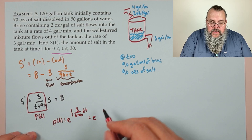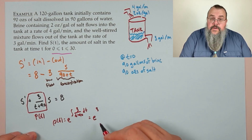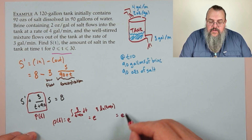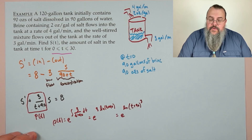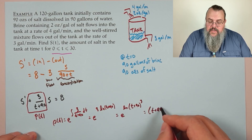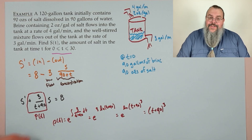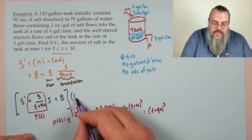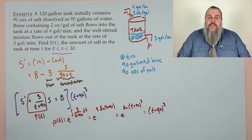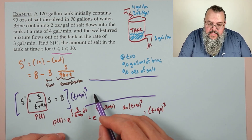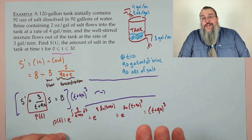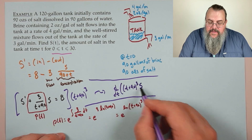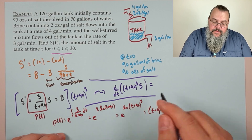Our p(t) = 3/(t + 90). The integral is 3∫dt/(t+90) = 3ln(t+90) = ln((t+90)³). The integrating factor is e^(ln((t+90)³)) = (t+90)³.